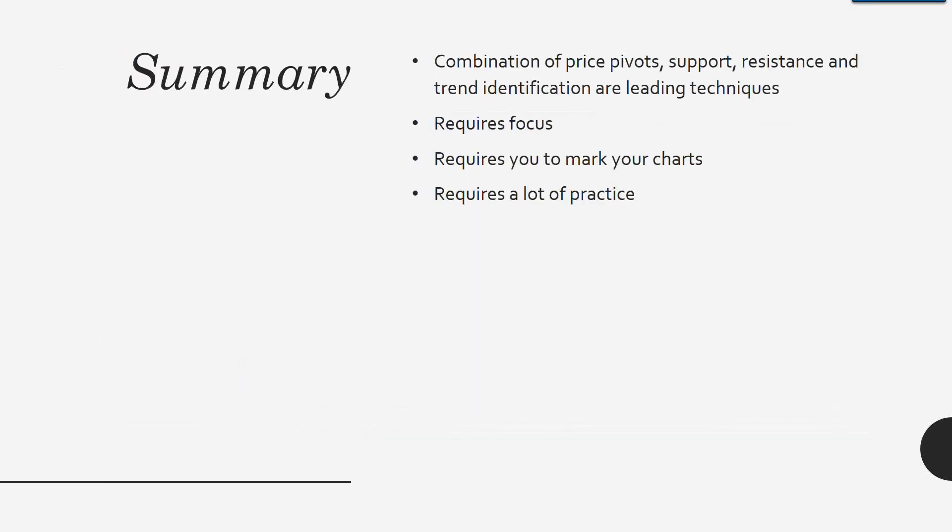In summary, if you combine price pivots with support, resistance, and trend, they're leading indicators. But it requires a lot of focus — you can't be jumping around a lot of different markets because you have to pull up your chart and start marking it. You have to ask: is this trending up, trending down, or sideways? What are my price bars doing? You really have to mark those charts to figure that out. And then you have to practice. As easy as I can pull up a chart and identify highs and lows, it's because I've been doing it for 15 years. It's going to take a lot of practice to get to that point.